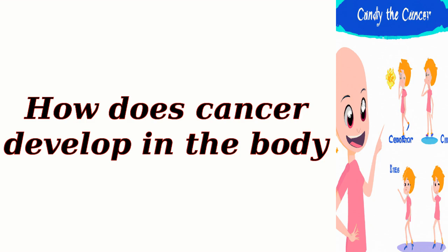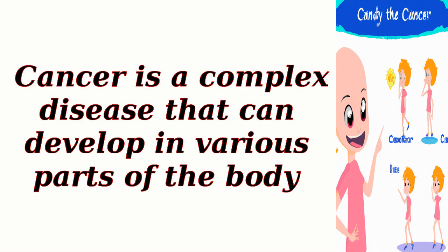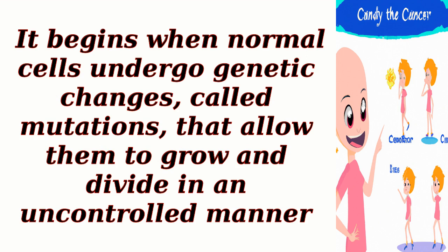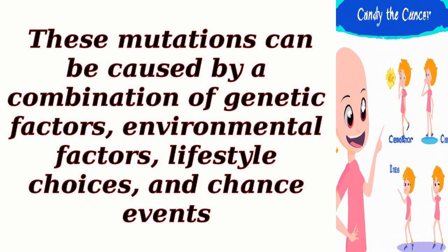How does cancer develop in the body? Cancer is a complex disease that can develop in various parts of the body. It begins when normal cells undergo genetic changes, called mutations, that allow them to grow and divide in an uncontrolled manner. These mutations can be caused by a combination of genetic factors, environmental factors, lifestyle choices, and chance events.